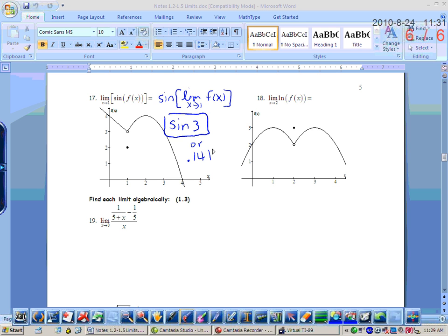Okay, for 18, this would be the same thing as the natural log of the limit as x approaches 2 of f of x. And what's the limit as x approaches 2? 2. So because I'm lazy, I'm just going to leave it as the natural log of 2. I don't really care what that decimal approximation is. You know, an easy way to remember it is you're just kind of flip-flopping the limit and that outer function and then work from the inside out.